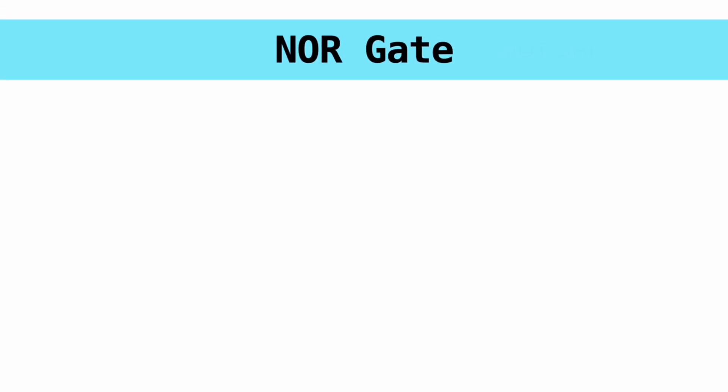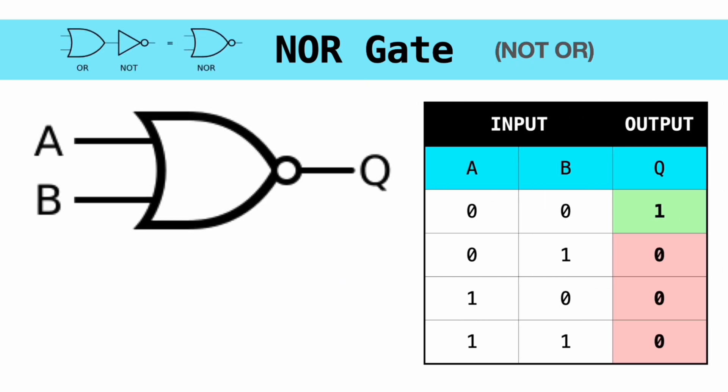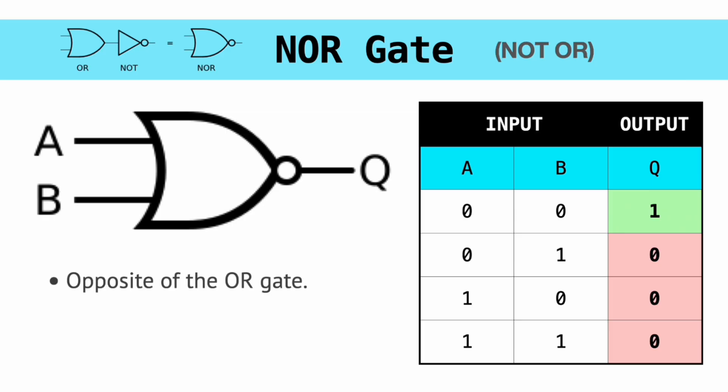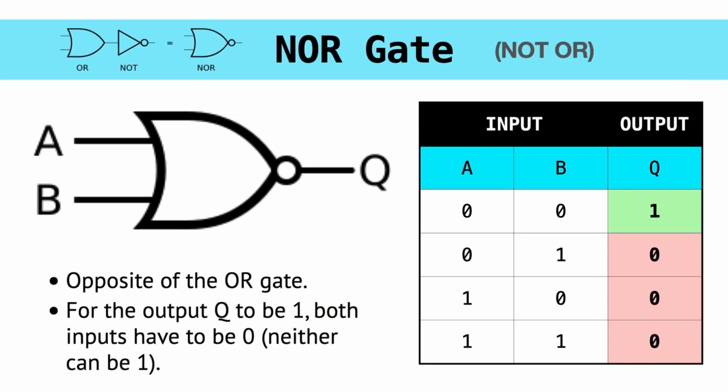And following on from here is the NOR gate. As you might have guessed, NOR is an abbreviation for NOT OR, and the gate is basically an OR gate followed by a NOT gate. Neither of the inputs can be 1 for the output to be 1, which is the complete opposite of the OR gate as you can see from the truth table.